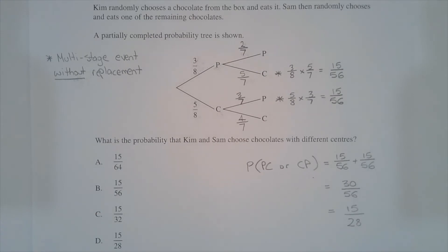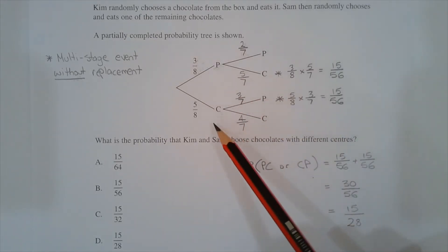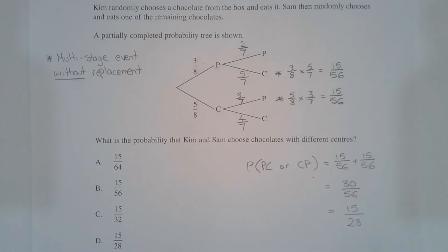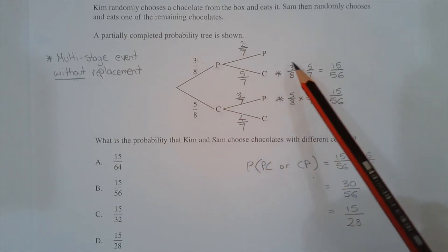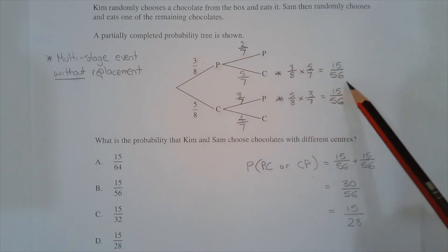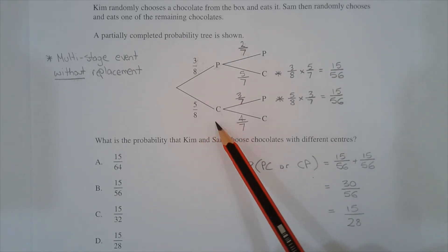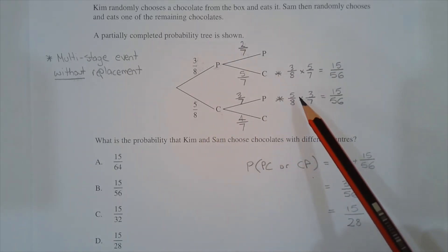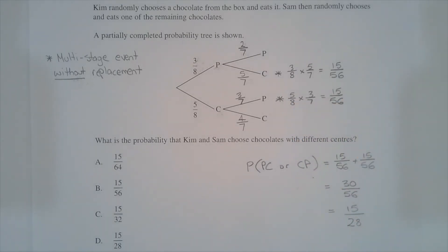We're interested in the probability that the two chocolates chosen were of different centres, and that can occur in any order. So the two outcomes of interest are peppermint-caramel or caramel-peppermint. The probability of peppermint then caramel is three out of eight multiplied by five out of seven, which equals 15 out of 56. The probability of caramel then peppermint is five out of eight multiplied by three out of seven, which equals 15 out of 56.